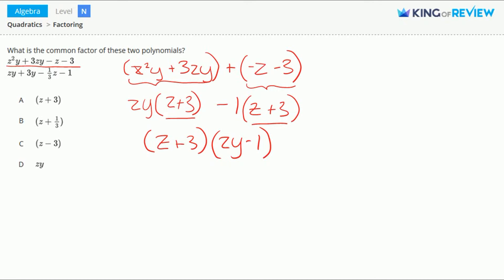Now let's work on the second polynomial. I'll do this one in black. Again, let's start by grouping. We'll group zy plus 3y in the first group. Plus, and in the second group, we have negative 1 third z minus 1.